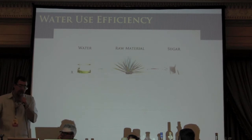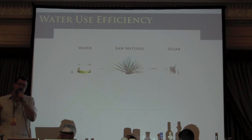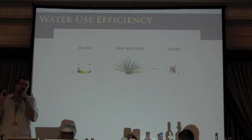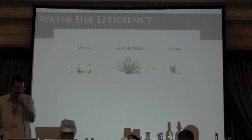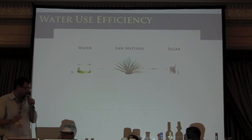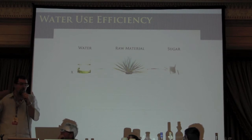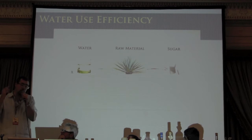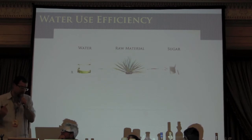Before explaining those sugars, I'd like you to understand the concept of water use efficiency. Water use efficiency is a measure of how much water needs to be lost in order to gain a certain amount of carbon. Agave — in this case blue agave, but agave in general — loses 20 to 40 liters of water per one kilogram of sugar produced.